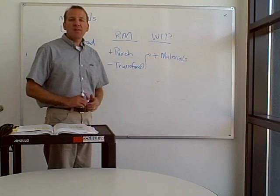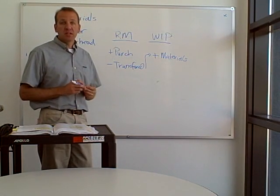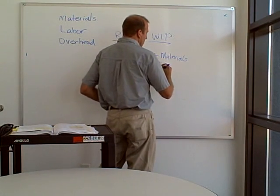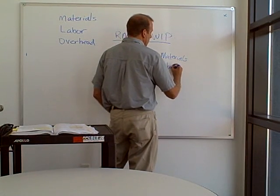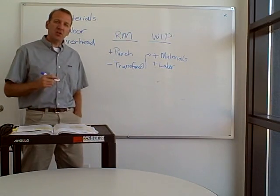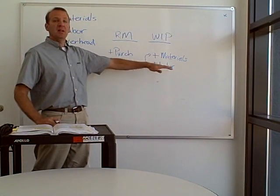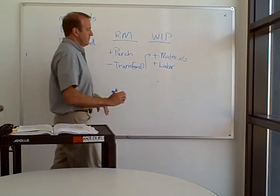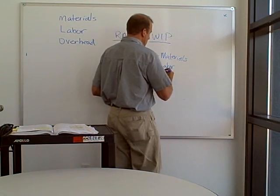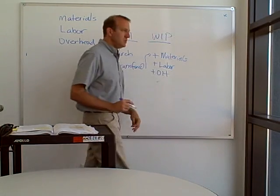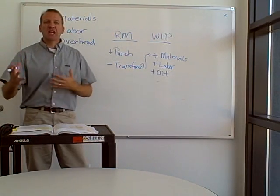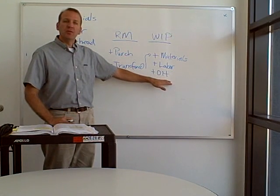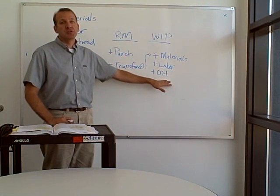What about the people manufacturing the chair? Their labor costs go into work in process as well. We're building this chair, so materials go into it, labor goes into it, and what else? The overhead. So we're going to add in our overhead costs. An accountant is actually monitoring and tracking all of these costs as they flow through the process of manufacturing our chair.